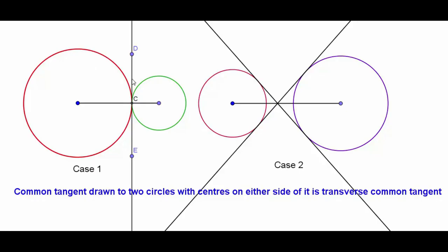Common tangent drawn to two circles with centers on either side of it is called transverse common tangent.